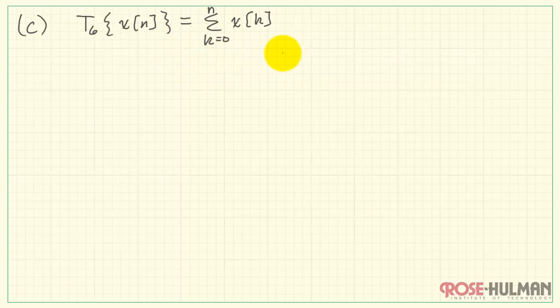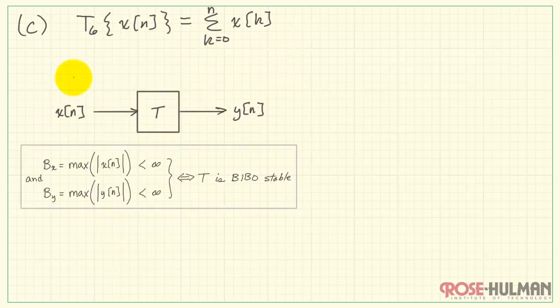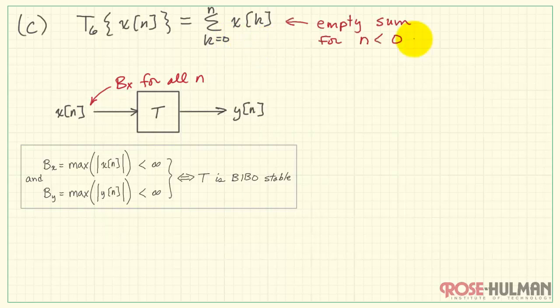Finally, for our third system, T6, we sum from K equals 0 up to the current time N. As before, I want to apply the constant BX for all time N. We start at K equals 0 and run up to time N. To recognize that this is an empty sum for N less than 0.